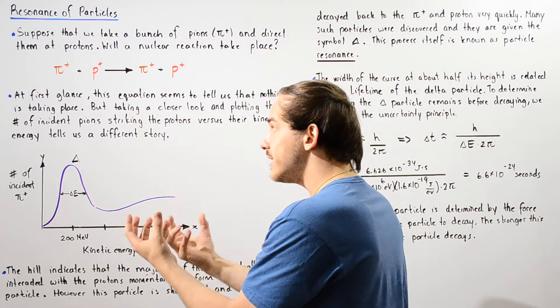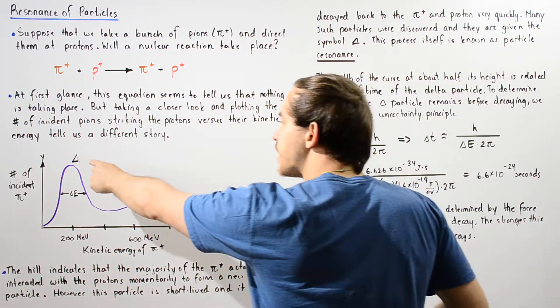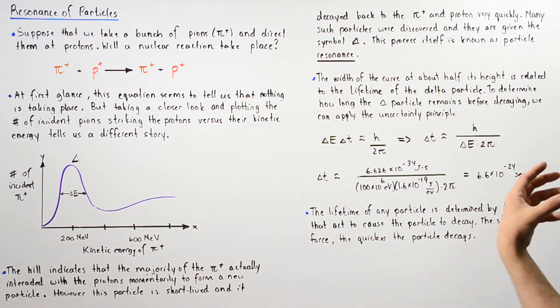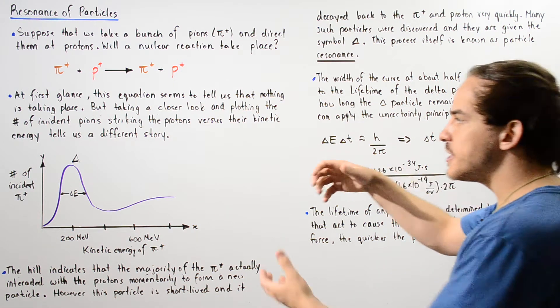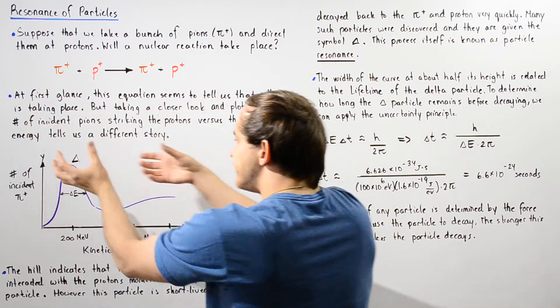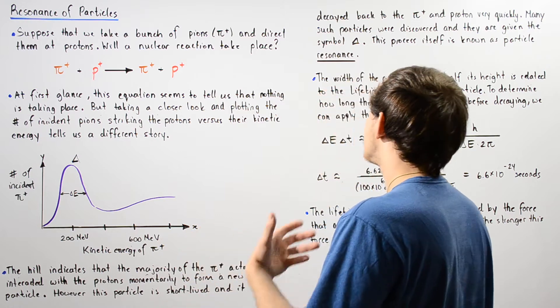And we signify this new particle with a delta letter. So delta signifies our resonant particle. And this process of these two combining momentarily and then decaying back to the pion and proton is known as resonance.